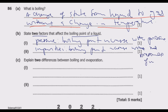The higher the level of impurities, the higher the boiling point. If the impurities are relatively very small, then the boiling point will be close to the boiling point of a pure substance. These are the two key ones.